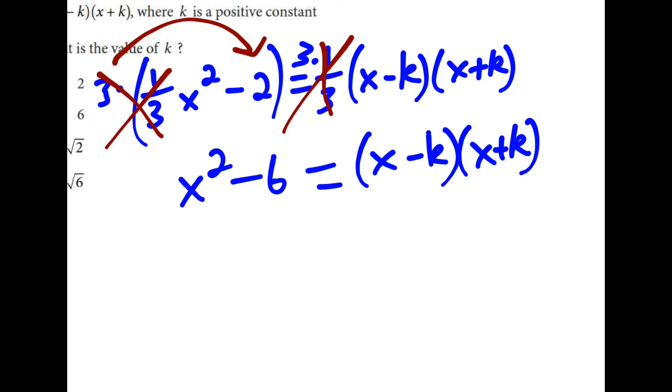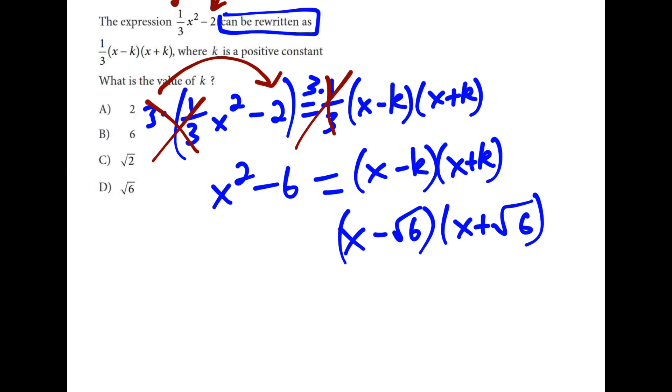But we can always figure out what number times itself will equal 6 just by adding a square root sign. It just doesn't happen to be rational here. Which leads us to answer choice D because that represents the value of k.